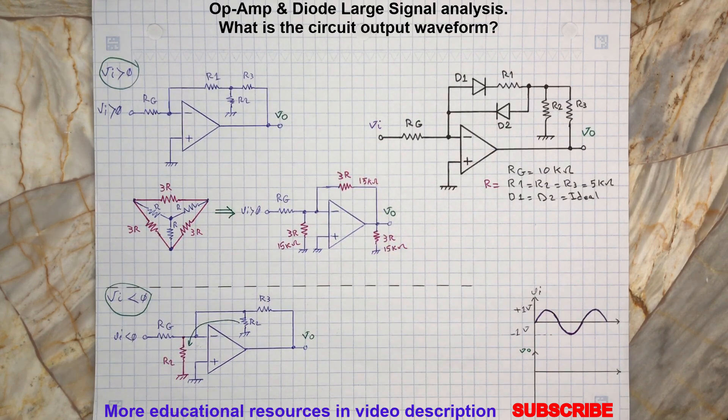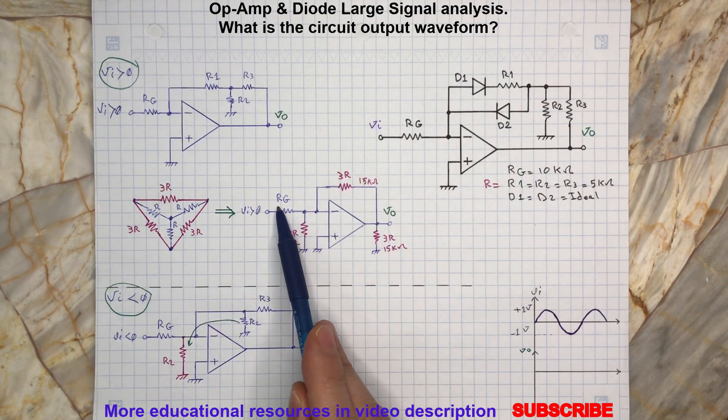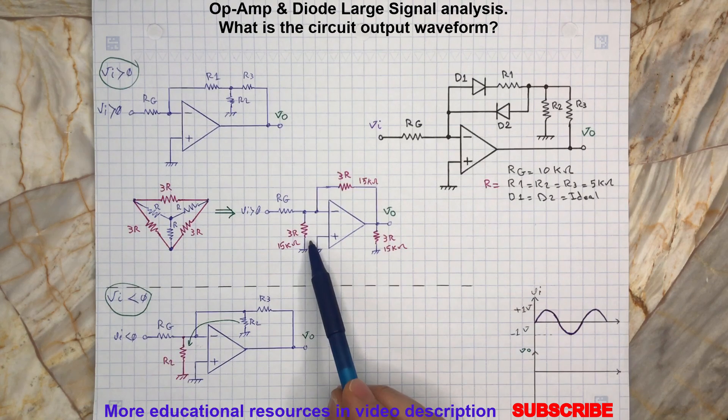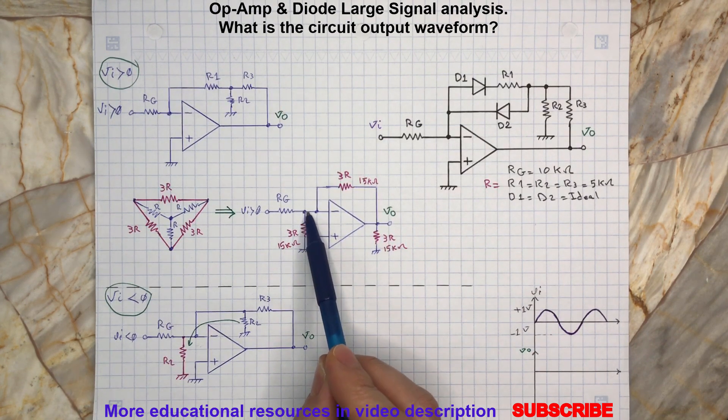Here is the circuit's final configuration for VI greater than zero. As you can see, the circuit simplified to an inverting op-amp amplifier with a feedback resistance of 15 kilohm and without any change on input resistance RG, which is 10 kilohm. Pay attention that the 15 kilohm resistance which is transferred to the inverting terminal will not affect the circuit gain and output voltage since it has zero voltage at both terminals. One terminal is directly grounded and one terminal is virtually grounded.